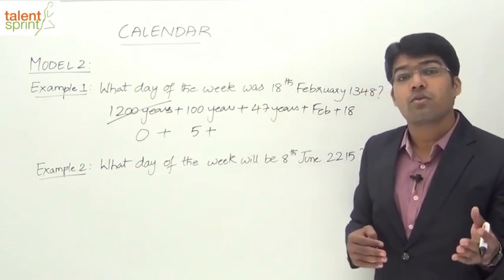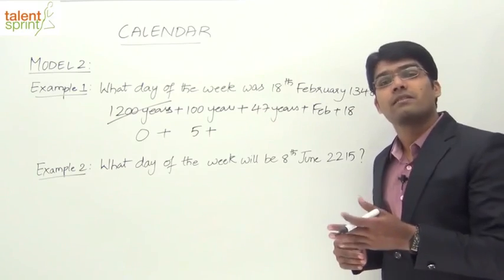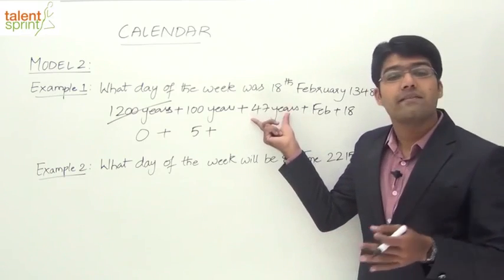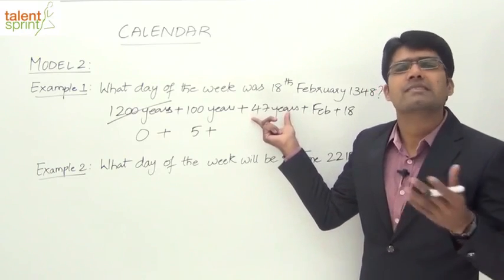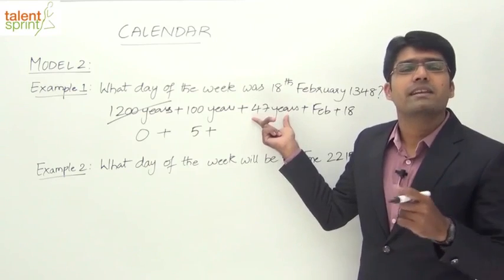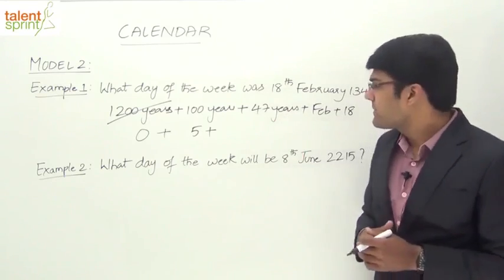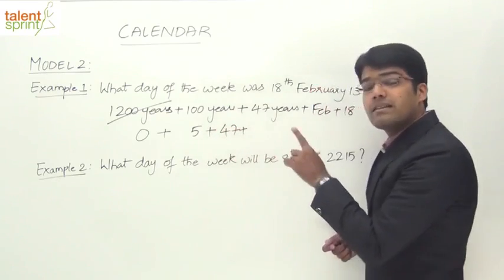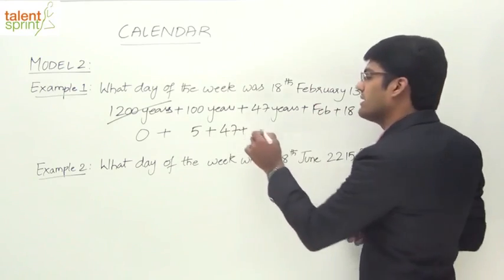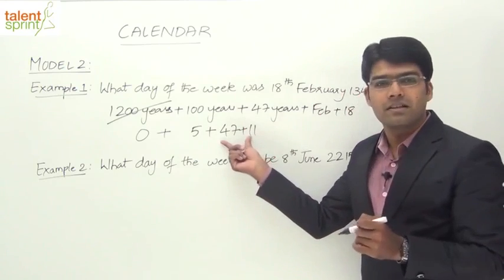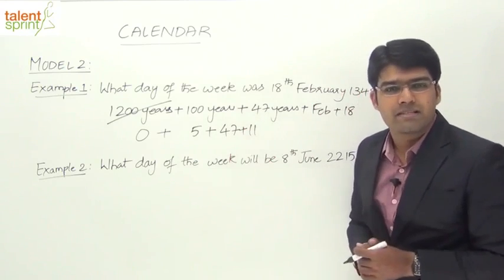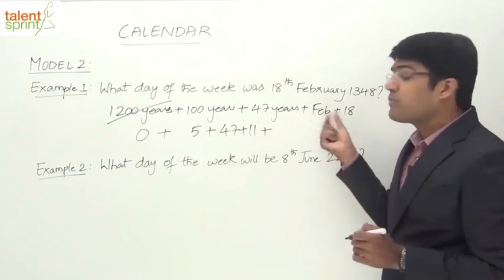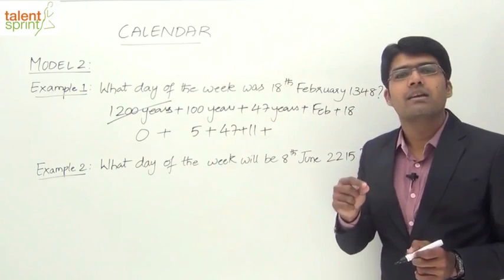From 1304 to 1344, there are 11 leap years. So 47 years will have 47 odd days, and since there are 11 leap years, those add 11 additional odd days. Now comes the month of February — the code for February is 3, which represents the number of odd days for all months before February.